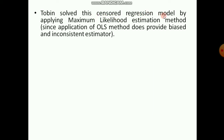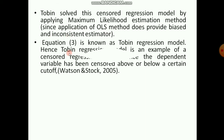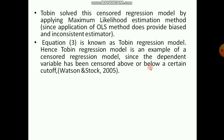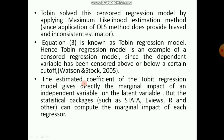Tobin solved the censored regression model by applying the maximum likelihood estimation method, since OLS does not provide unbiased or consistent estimators. This is known as the Tobit regression model — an example of a censored regression model since the dependent variable has been censored above or below a certain cutoff. The estimated coefficients of the Tobit regression model give directly the marginal impact of an independent variable on the latent variable, though statistical packages such as Stata, EViews, and R can also compute the marginal impact on the actual value.